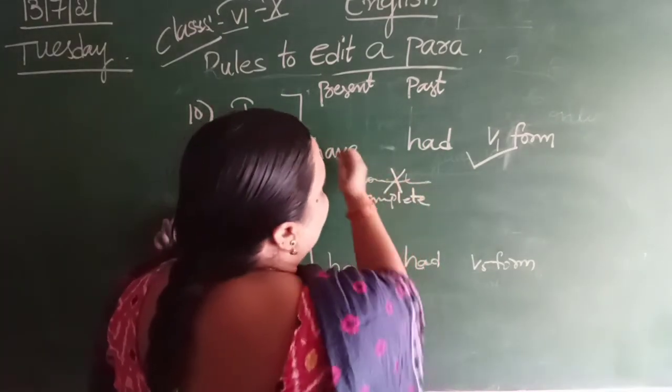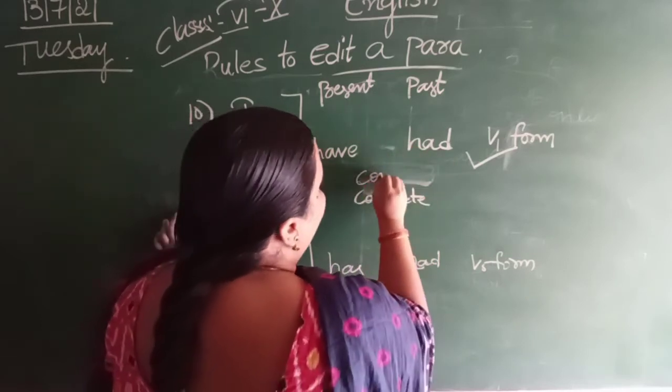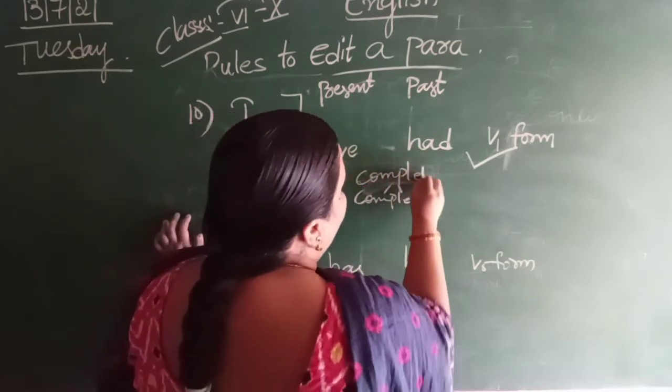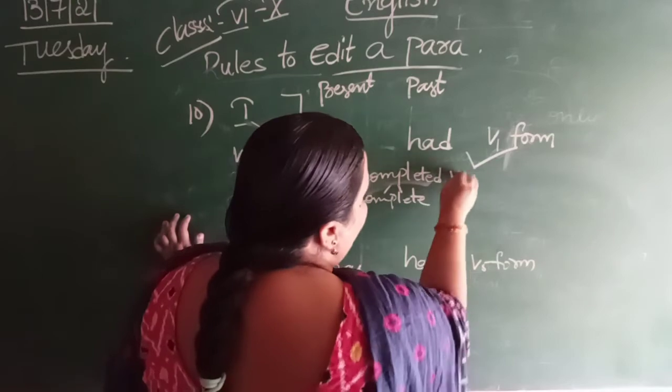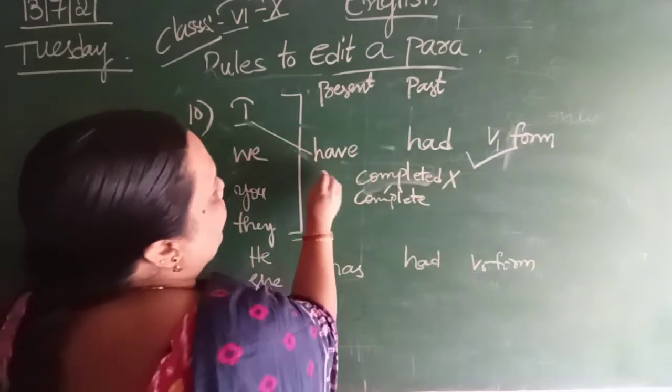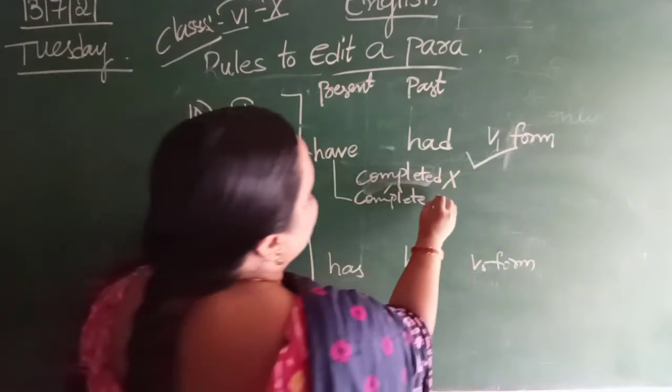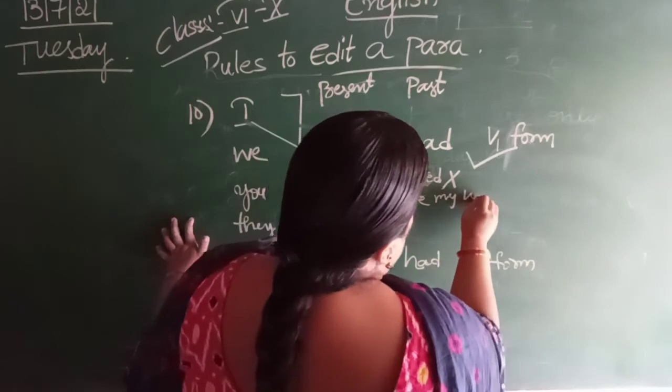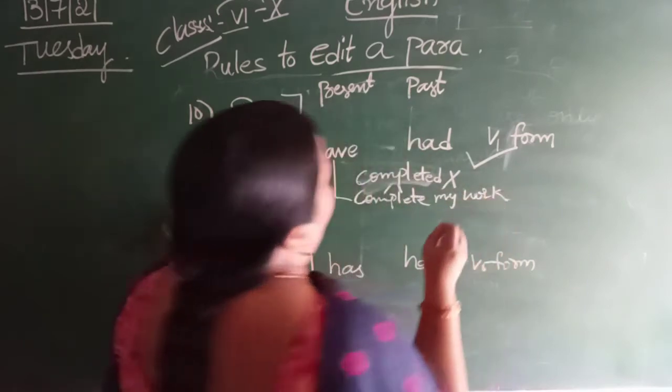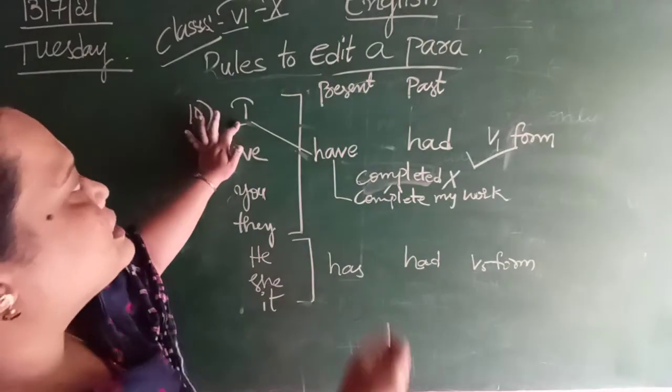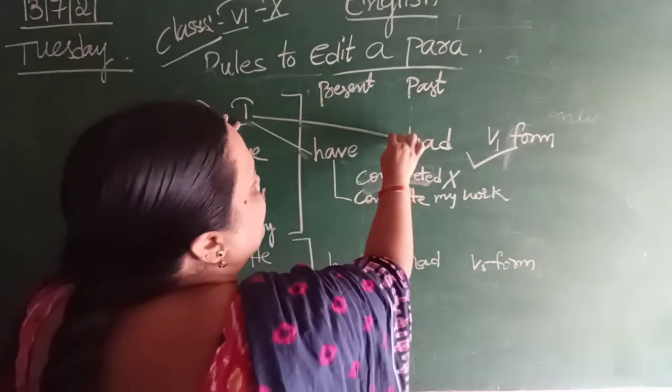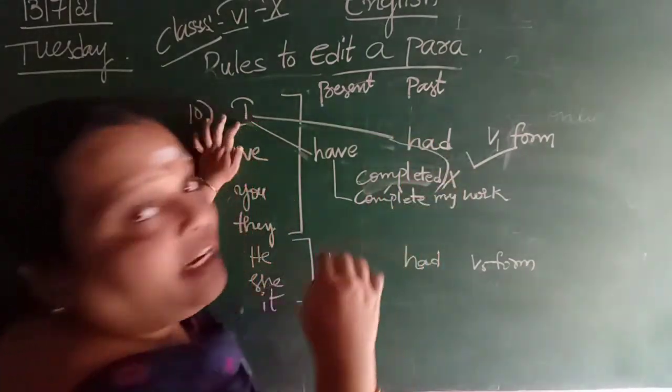Generally starts like this. Okay? Complete. Okay. Completed. Completed. So, this is wrong. What is correct? I have complete my work. Okay, understood?